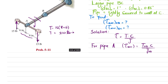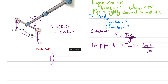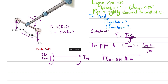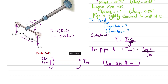When we cut pipe AB and draw the free body diagram, we have an applied torque of 210 pound-inches. At the cut section, by equilibrium, there is an opposing internal torque T_AB, so T_AB equals 210 pound-inches.